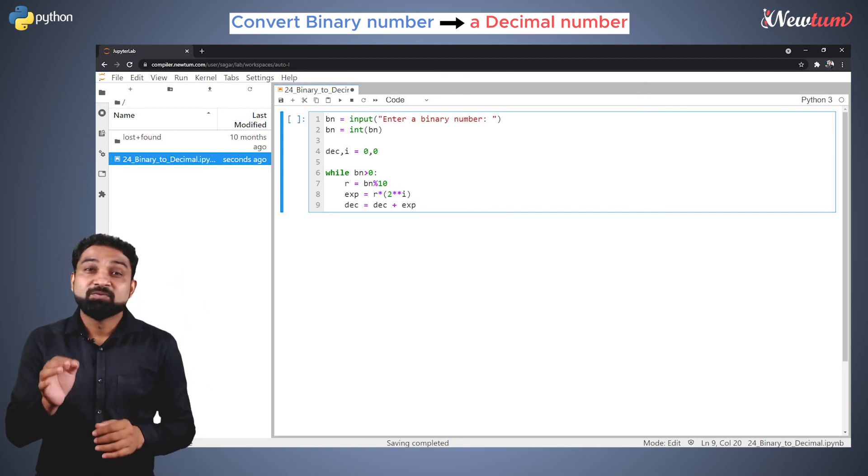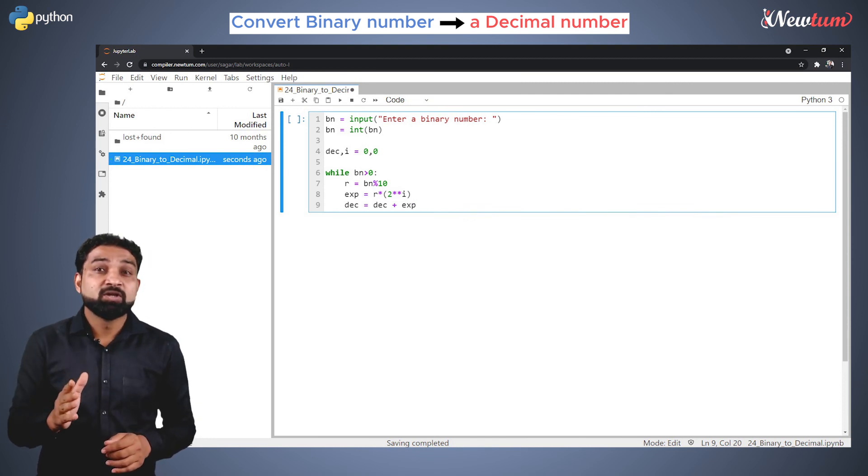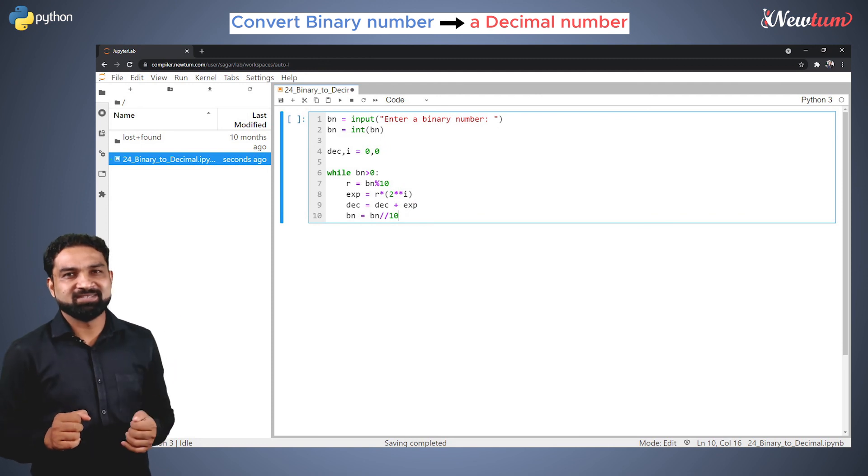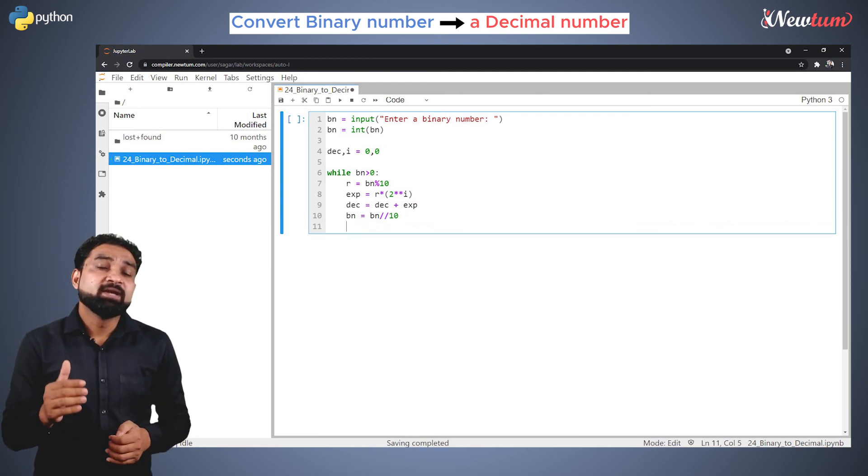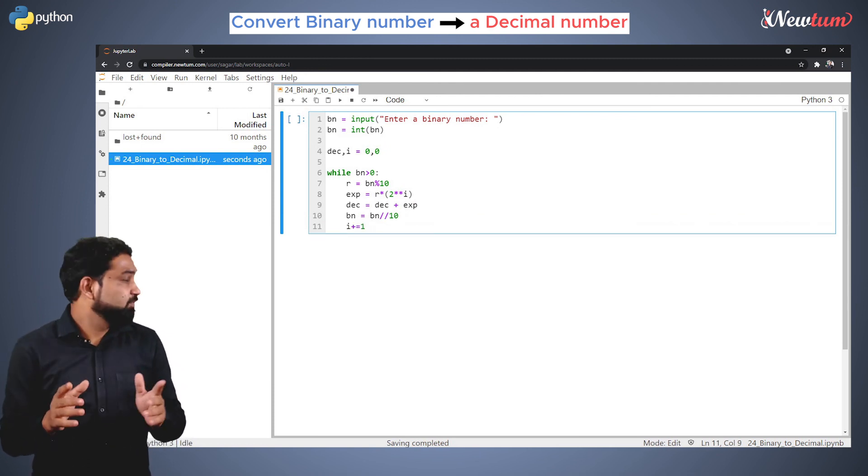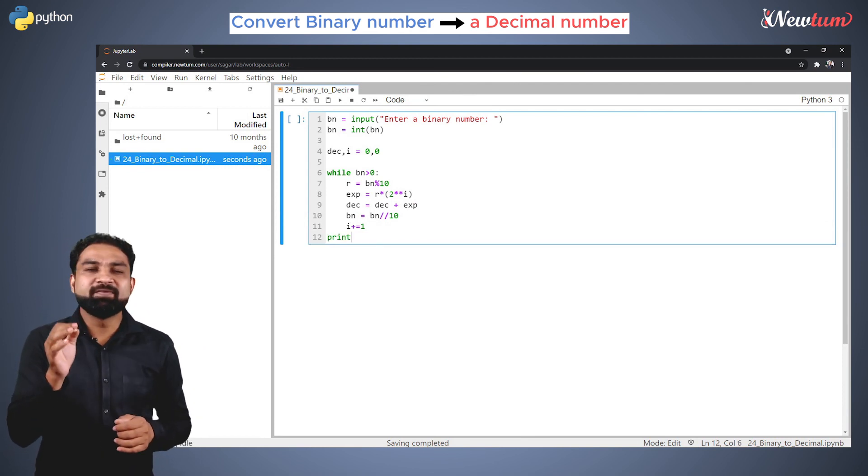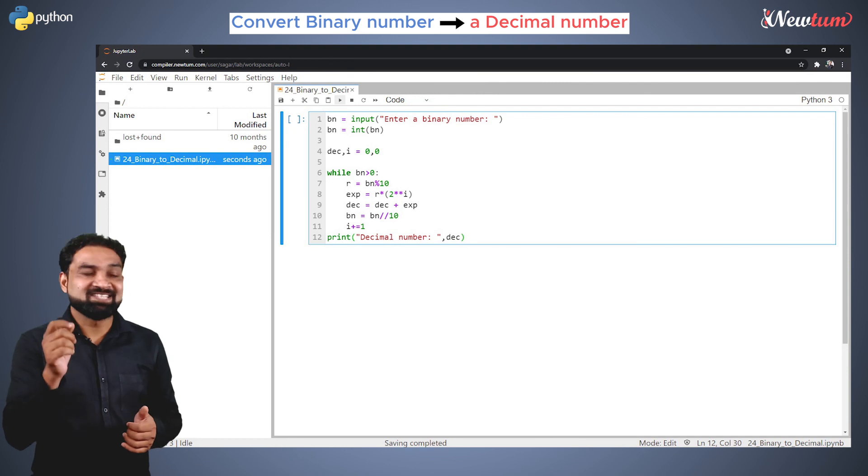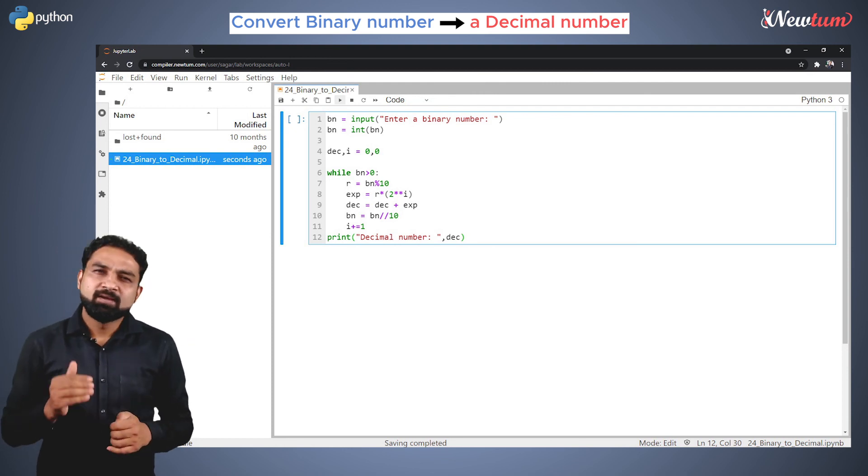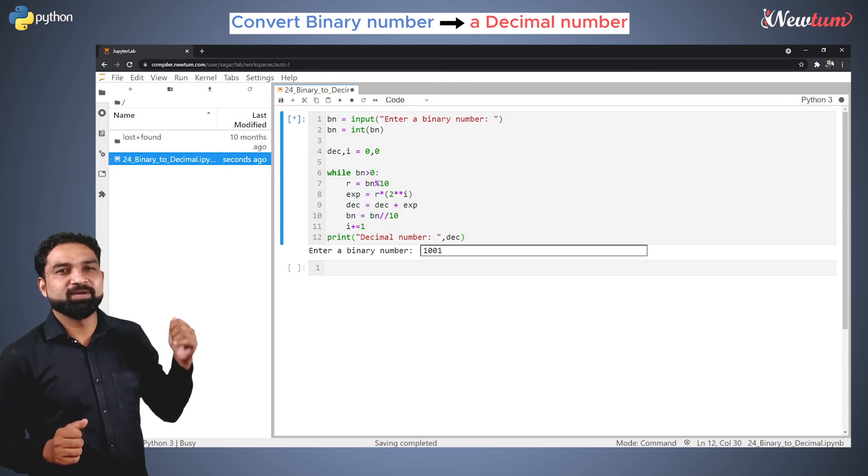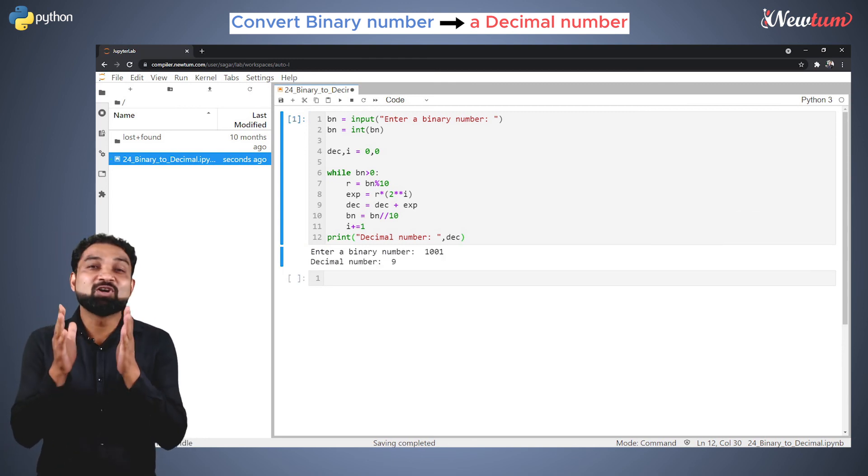Now we will use the floor operator to get the quotient in the variable bn like this. Then increment the counter i with 1. After the loop, print the variable dec nicely like this. Run the program and enter the input as 1001. We got the output 9. So now we are sure that our program is working.